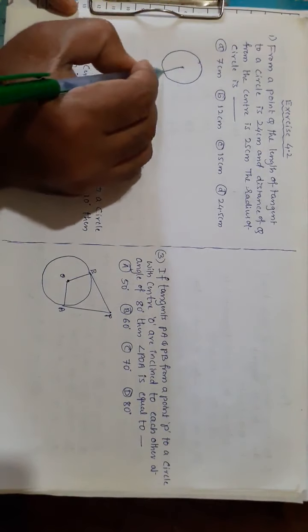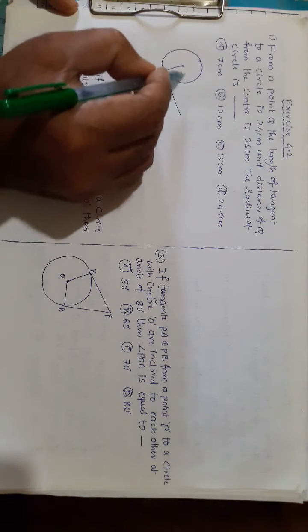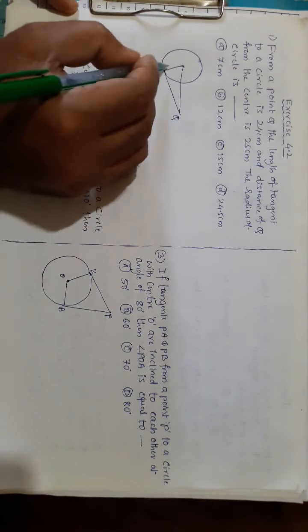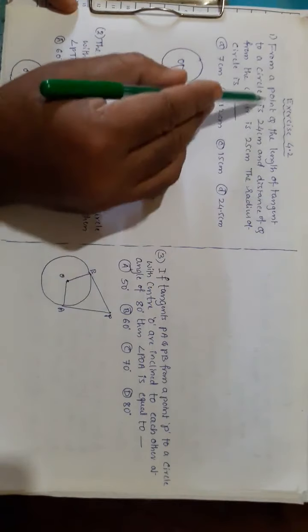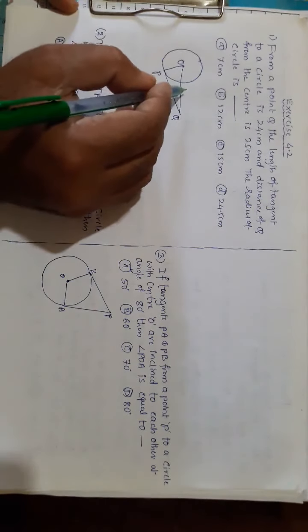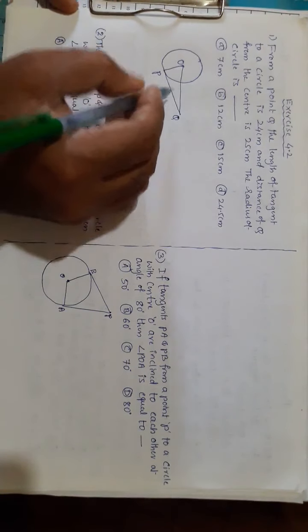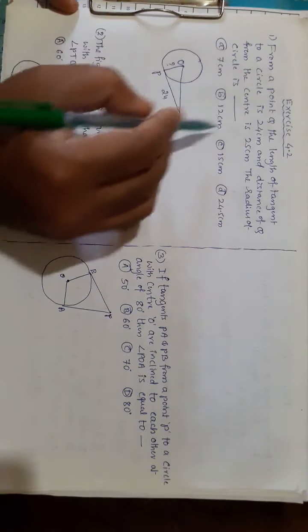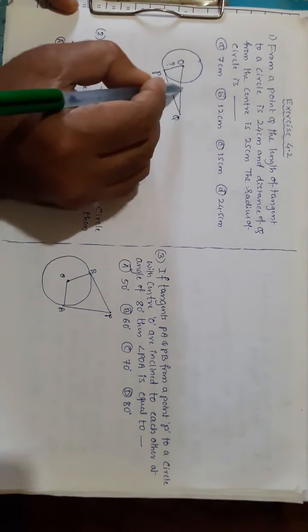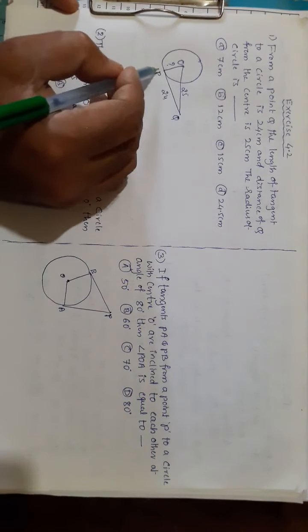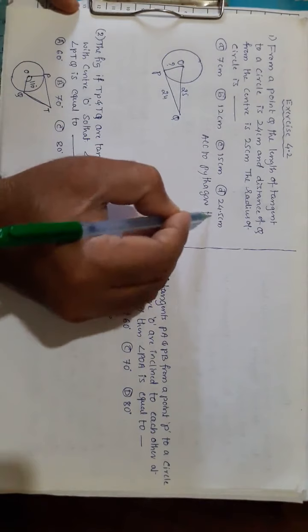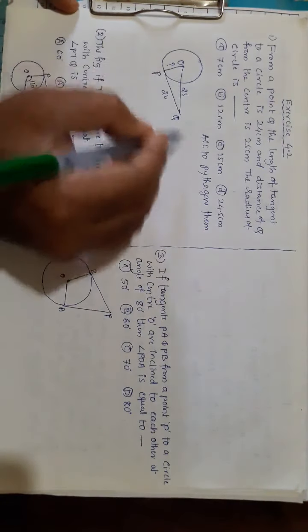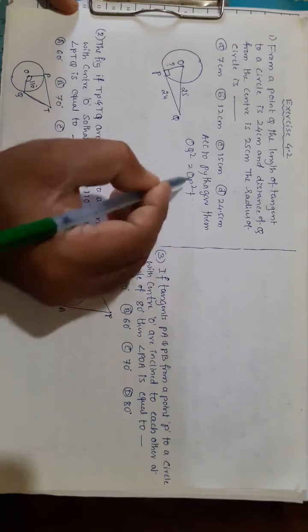Drawing the circle with center O. The tangent touches at point P, and Q is external. PQ equals 24 centimeters and OQ equals 25 centimeters. Since the radius and tangent are perpendicular, we apply Pythagoras' theorem: OQ² equals OP² plus PQ².